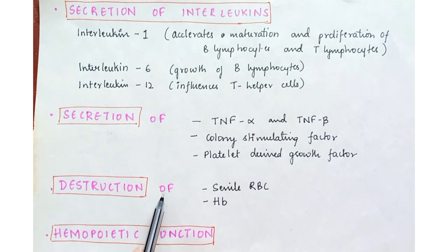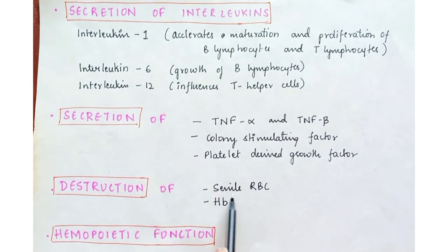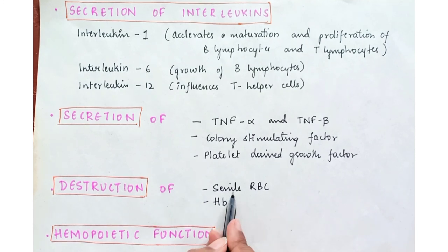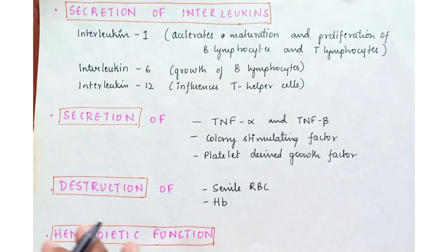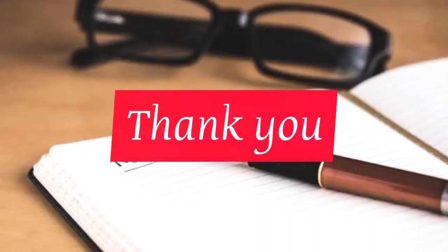The reticulo-endothelial system also helps in the destruction of senile — that is, old — RBCs, particularly in the spleen. When senile RBCs are broken down, hemoglobin is released and also destroyed. Lastly, these cells play an important role in the hemopoietic function — the production of blood cells. Thank you for watching the video.